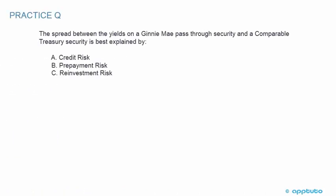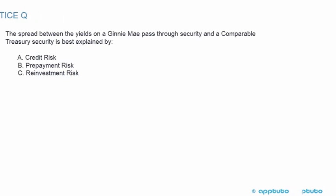Another practice question: The spread between yields on a Ginnie Mae pass-through security and a comparable treasury security is best explained by: A. credit risk, B. prepayment risk, or C. reinvestment risk.